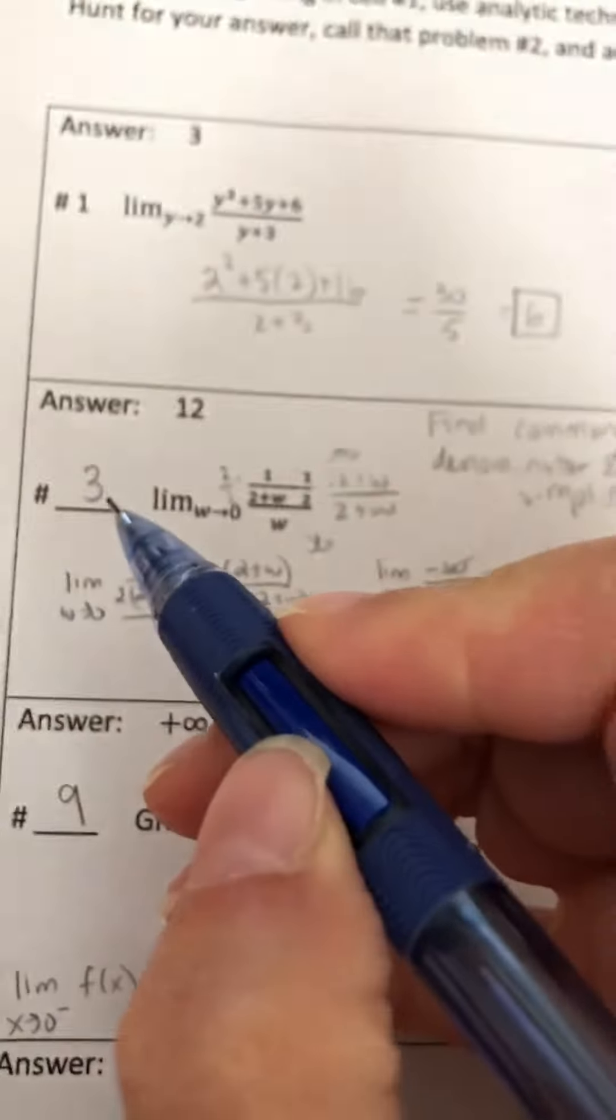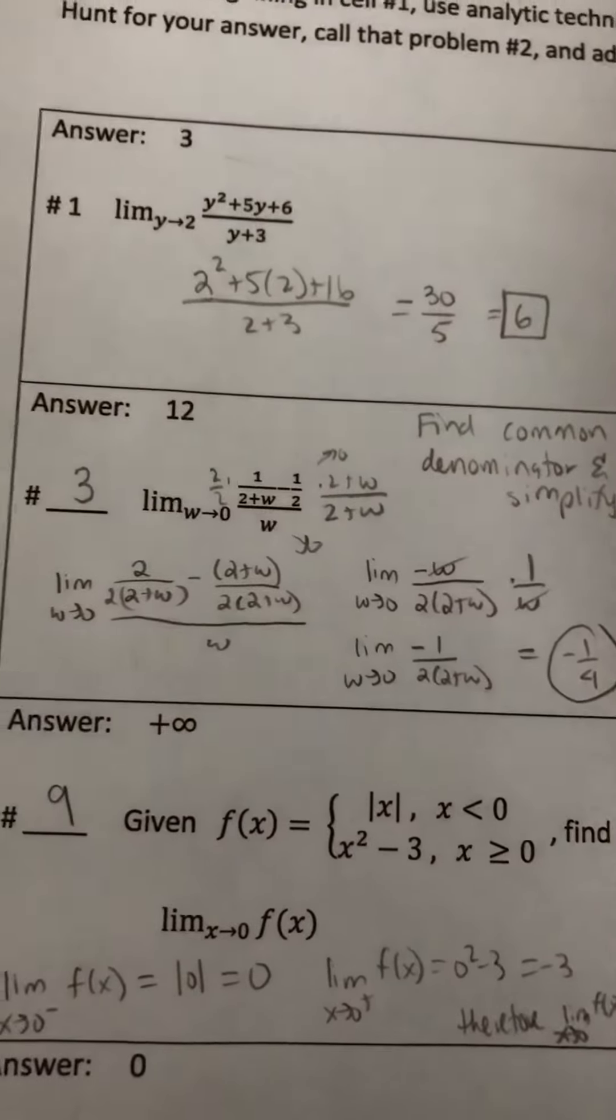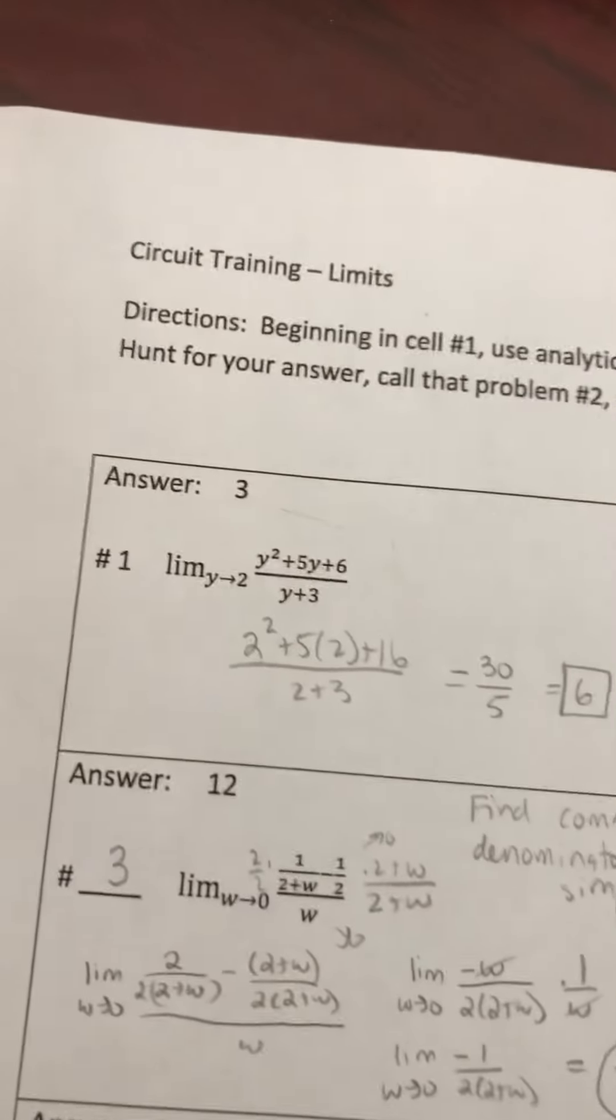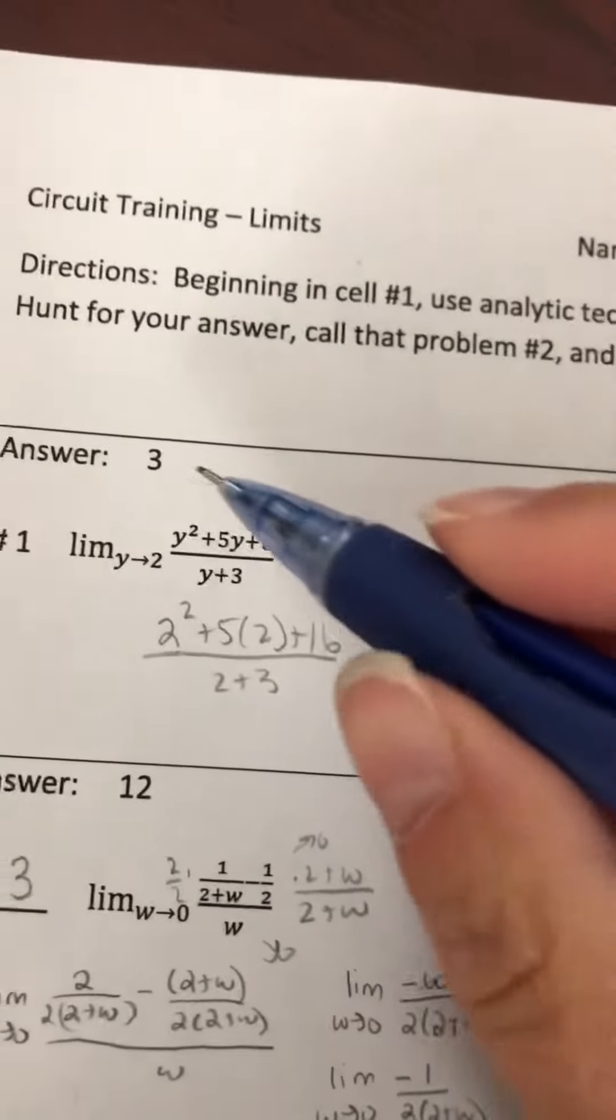Then you look for 12 with all the answers in the worksheet, and that one ends up being here. So then that becomes number 3, and so on and so forth. The idea is that when you're finished, you should get the final answer of 3 to get you back where you started—so you've completed the circuit.